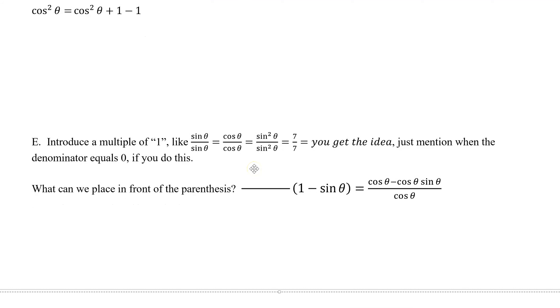You can introduce also a multiple of 1, like sine theta over sine theta and cosine theta over cosine theta. You just have to make sure that you mention when these are 0. Like sine theta is 0 at 0. So as long as that issue doesn't happen, you're fine.